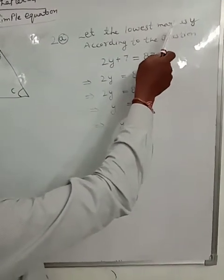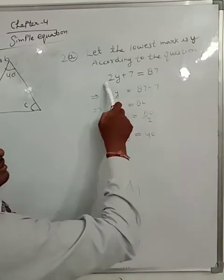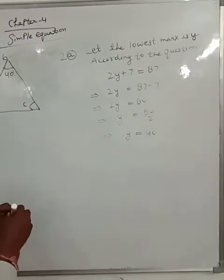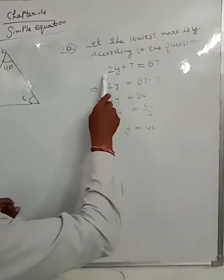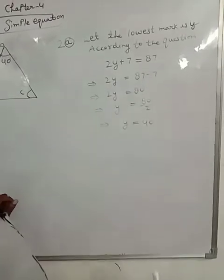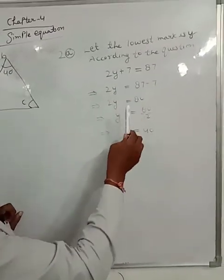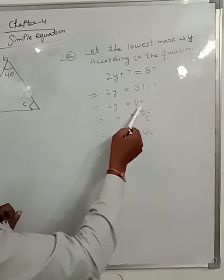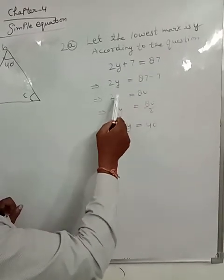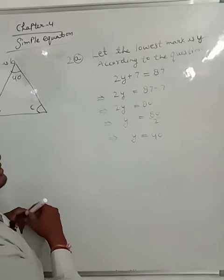The lowest mark twice, we have 7 added, so the highest mark comes in. So 2i plus 7 is equal to 87. Transposing 7: 2i equals 80, so i equals 80 upon 2, which is 40. That is our answer.